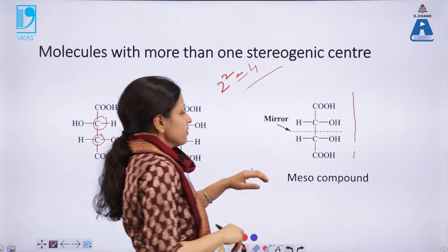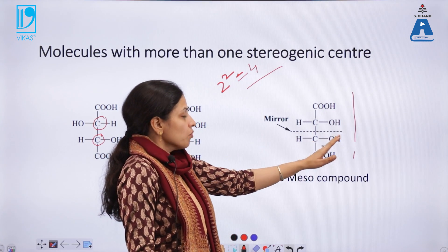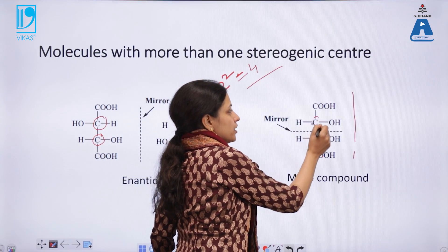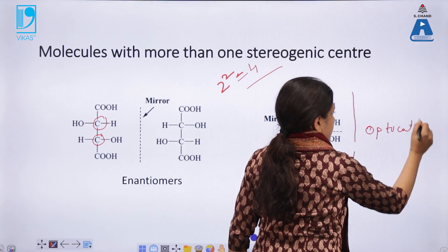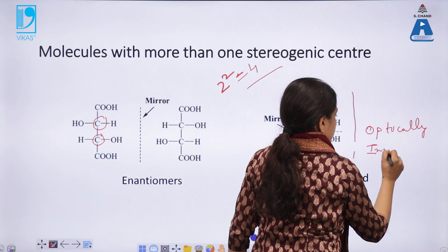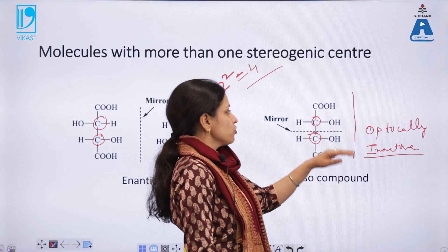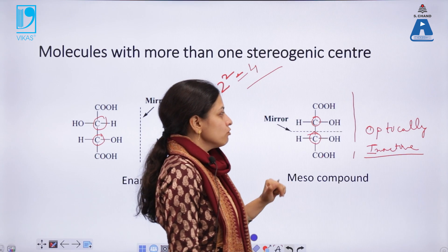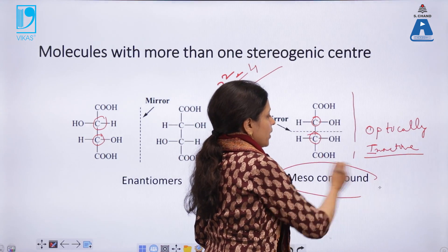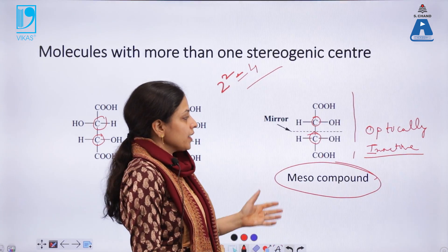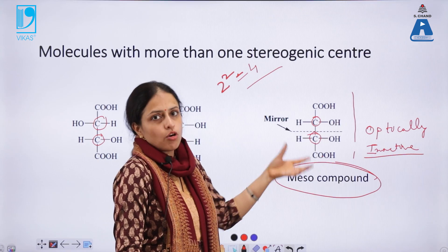On the other hand, the form of tartaric acid where both hydroxyl groups are on the right side of the molecule has a plane of symmetry. So even though it bears two chiral centers, it will be optically inactive because it forms a superimposable mirror image. Such compounds, which have more than one stereocenter and yet are optically inactive, are known as meso compounds — this is a kind of intrinsic compensation which renders the molecule optically inactive.